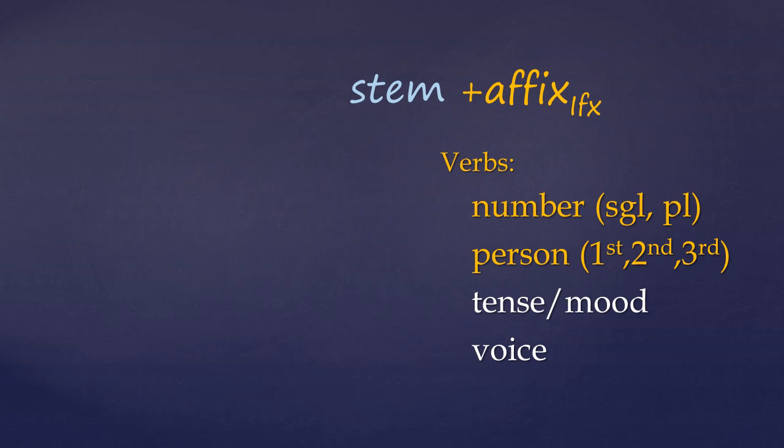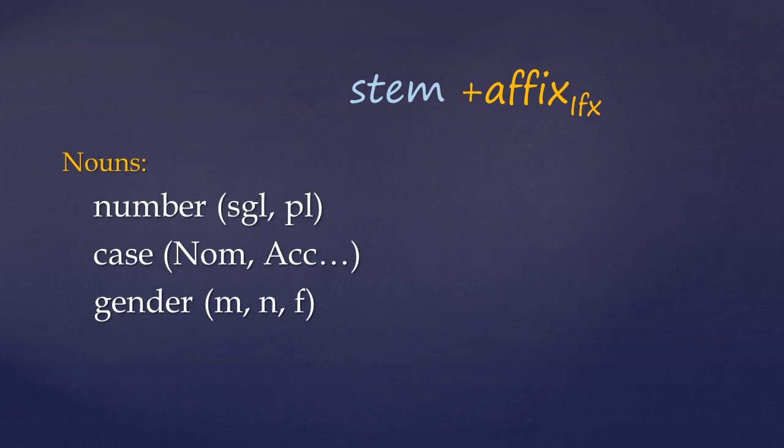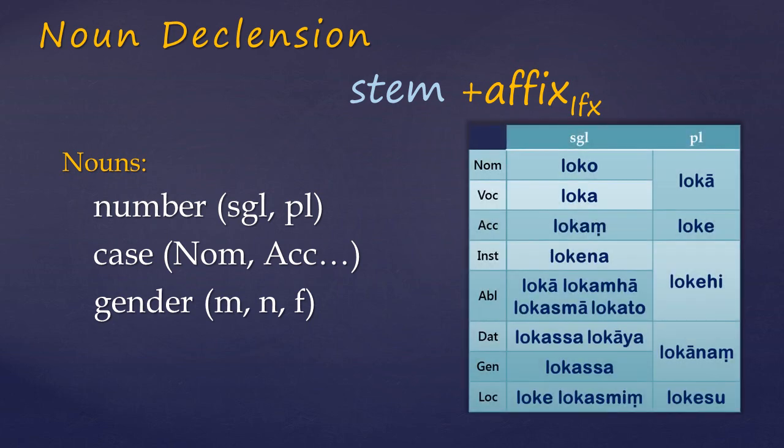Next, Warder moves on to an analysis of nouns. And these too can be thought of as a combination of stem and inflectional affix, which is commonly called declension. So nouns are marked to indicate number, case and gender. And unlike verbs, it's the stem form of nouns which is listed in dictionaries.